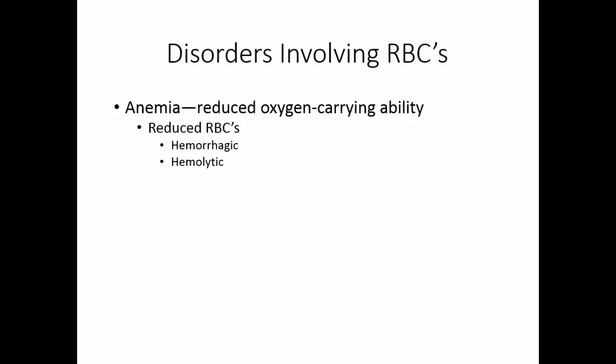Hemolytic anemia occurs when red blood cells are destroyed faster than normal, due to damage — people with artificial heart valves, for example, damage red blood cells more quickly — or because of some autoimmune disease. Aplastic anemia occurs if the bone marrow has been damaged and shuts down production. Chemotherapy, radiation, and exposure to certain chemicals like benzene can cause aplastic anemia.